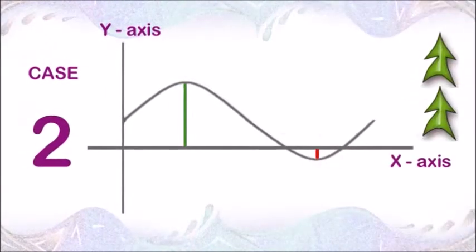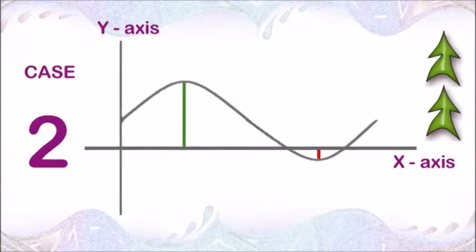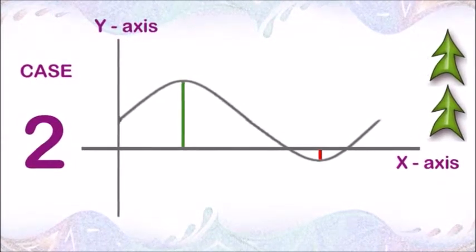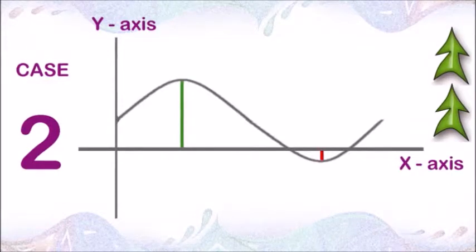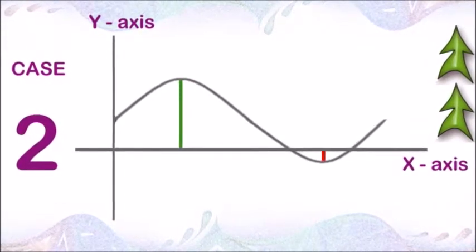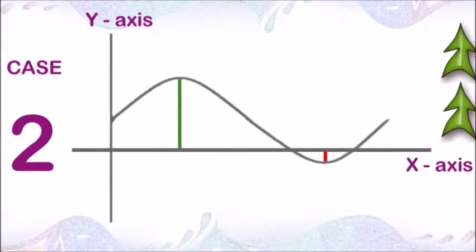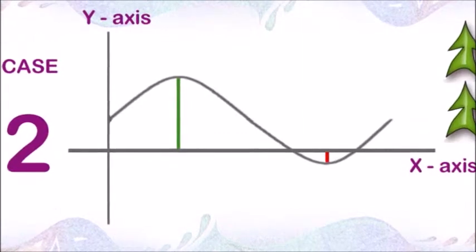Case 2: If the up cycle is much more than the down cycle, this means there is very strong positive growth. So the graph will show very high positive value.